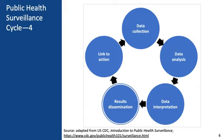From there, we move to results dissemination. We've collected data, analyzed it to answer our question, and interpreted it. But if we want action, we need to share that data interpretation with the people who will take action. We can make results publicly available, or we may need special meetings with policymakers so they understand the interpretations and can act. It all depends on who we want to act on the data — whoever that is should be the focus of our dissemination efforts.